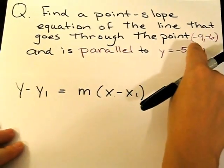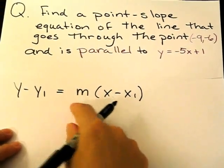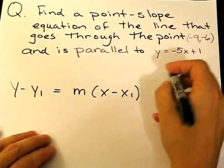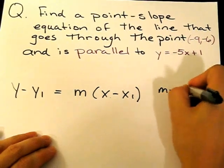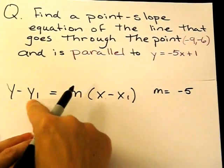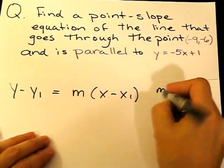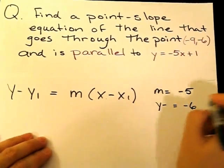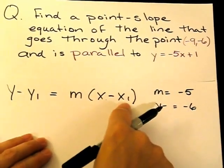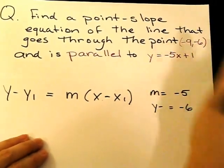I'm going to take the information I have to plug into this equation. So what I have is m, which is my -5. I have my y1, which is my -6. I have my x1, which is my -9.